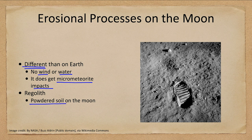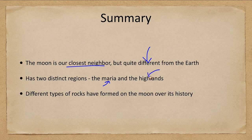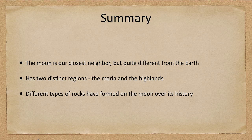To summarize this introductory lecture on the moon: our closest neighbor is very different from Earth, with two very distinct regions — the maria, which are the darker, mostly craterless regions, and the highlands, which are the heavily cratered, lighter colored regions. We also looked at the different types of rocks — basalts, anorthosite, and breccias — and the erosional processes that occur on the moon. That concludes this lecture on the structure of the moon. We'll be back next time for another topic in astronomy. Have a great day, everyone!